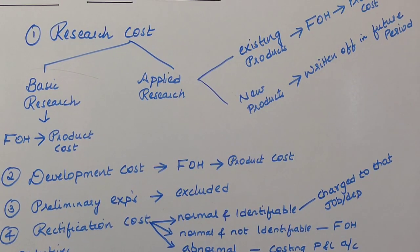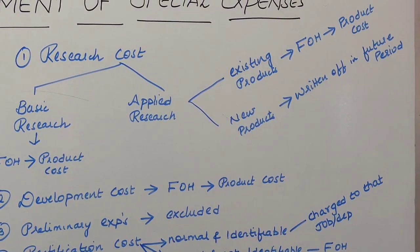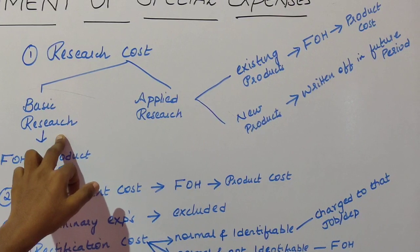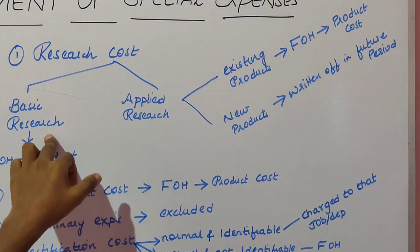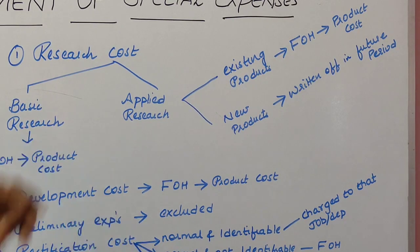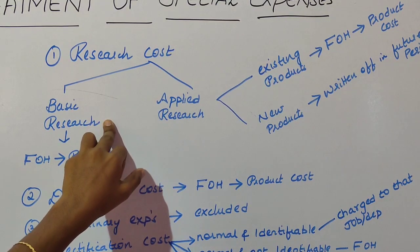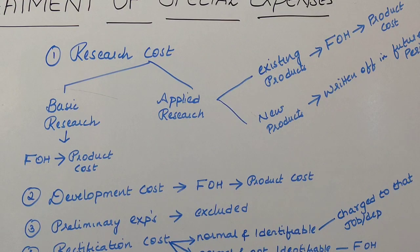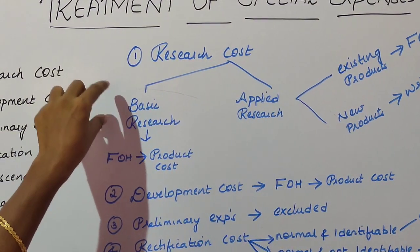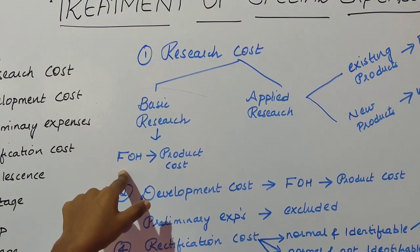The treatment of research cost in cost accounting depends on the type of research. The two main types are basic research and applied research. Basic research is a research that adds further knowledge to existing knowledge — it expands the existing base of scientific knowledge. Basic research is generally theoretical, with the outcome being the development of theory. Basic research cost is treated as fixed overhead or manufacturing overhead.